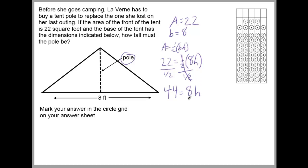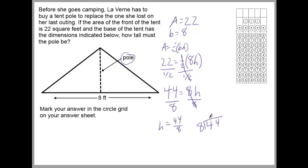We bring this down. So now all we need to do is get rid of the 8. When a number is right next to a variable it means they're multiplying each other, so you divide by 8 to get H by itself. 44 divided by 8 — so H equals 44 over 8, which is the same as H equals 44 divided by 8. Using a calculator, 44 divided by 8 equals 5.5. So this pole is 5.5 feet long.